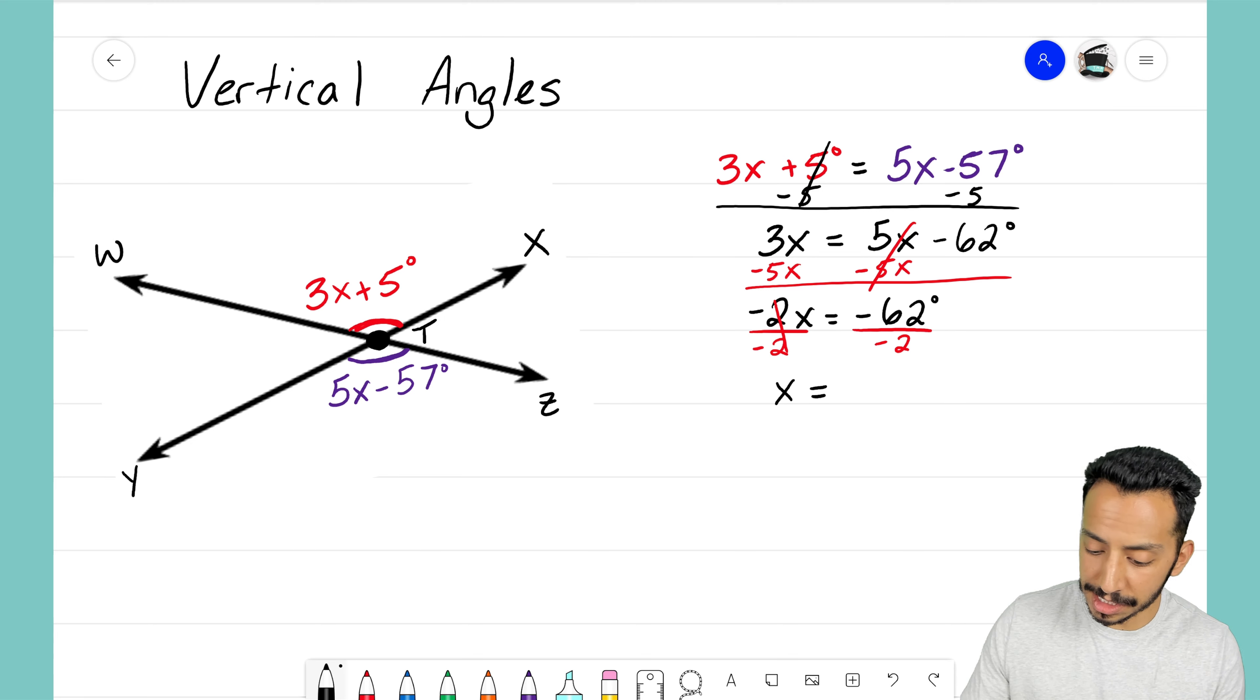Well, the negatives are going to cancel and 62 divided by 2 leaves us with 31 degrees. So I see right there that my x variable equals 31 degrees. We solved that because of the fact that we had vertical angles.